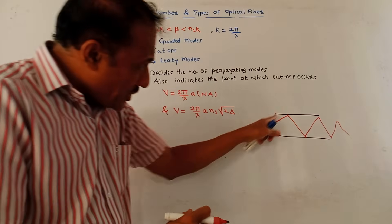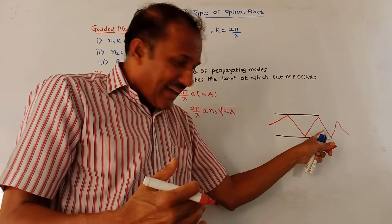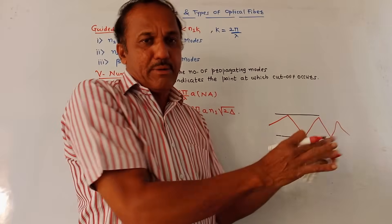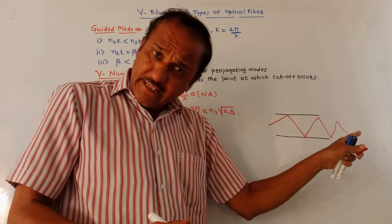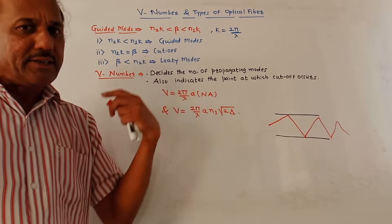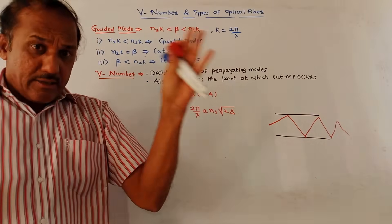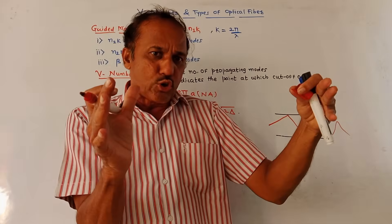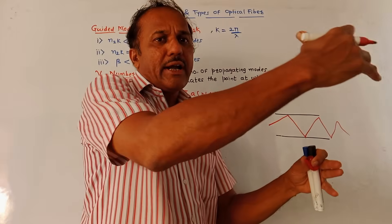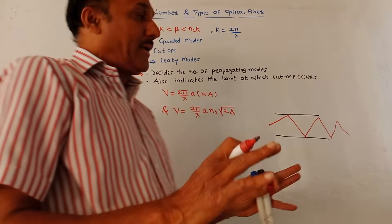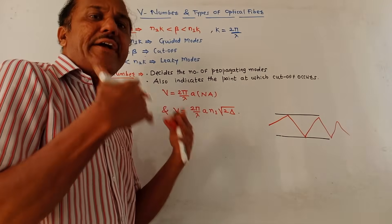Such a mode — mode means ray — such a light ray is guided by the fiber optic cable. So this mode is called guided mode. I have shown a single mode, a single light ray. Depending on the type of cable, there can be multiple rays, multiple modes. The major requirement is that ideally all these light rays entering into the fiber optic cable should propagate along the entire length of the cable. Such modes are called guided modes.